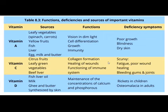Collagen is a protein that makes the connective tissues stronger. Our connective tissues include blood and other tissues. Vitamin C helps in the healing of wounds, which is also a role of protein.